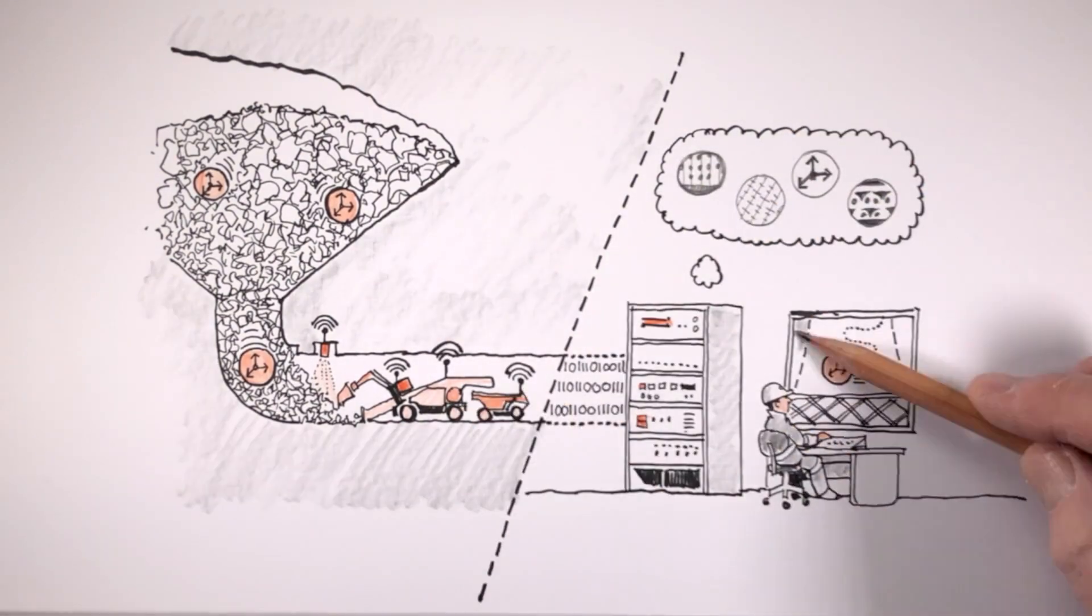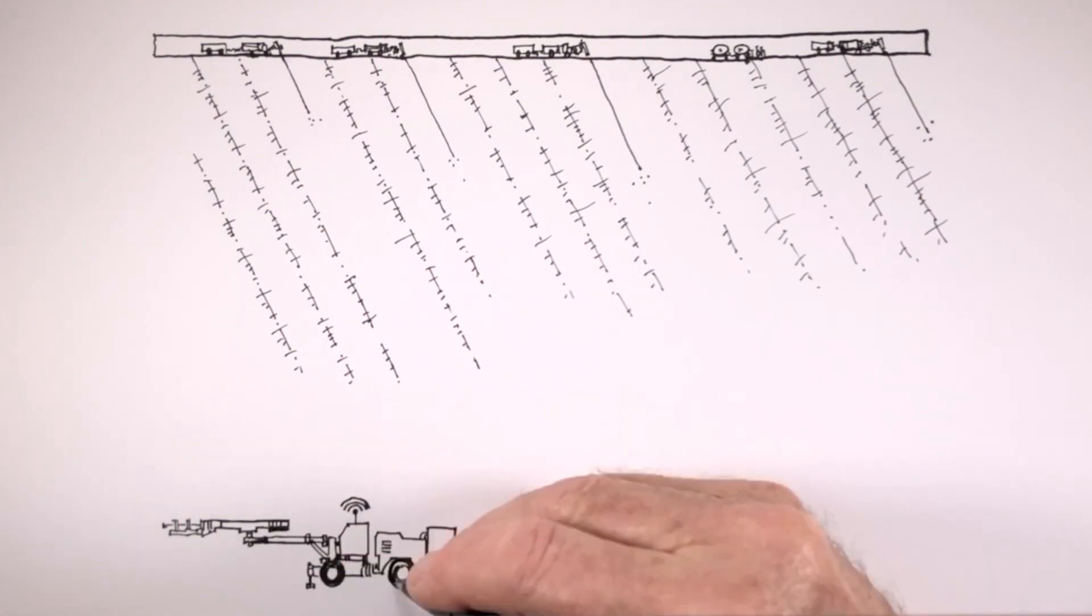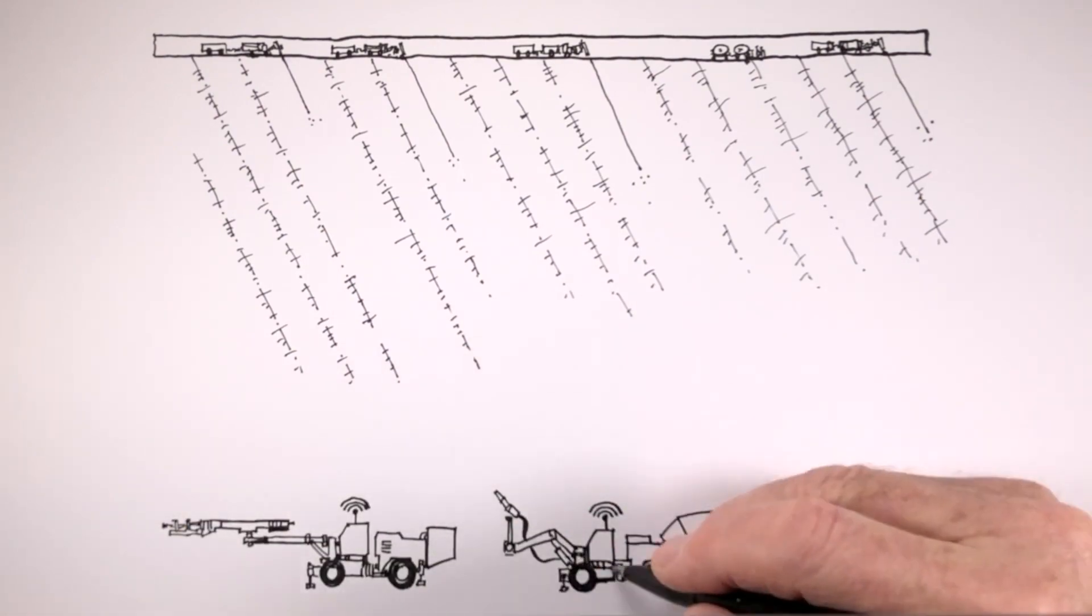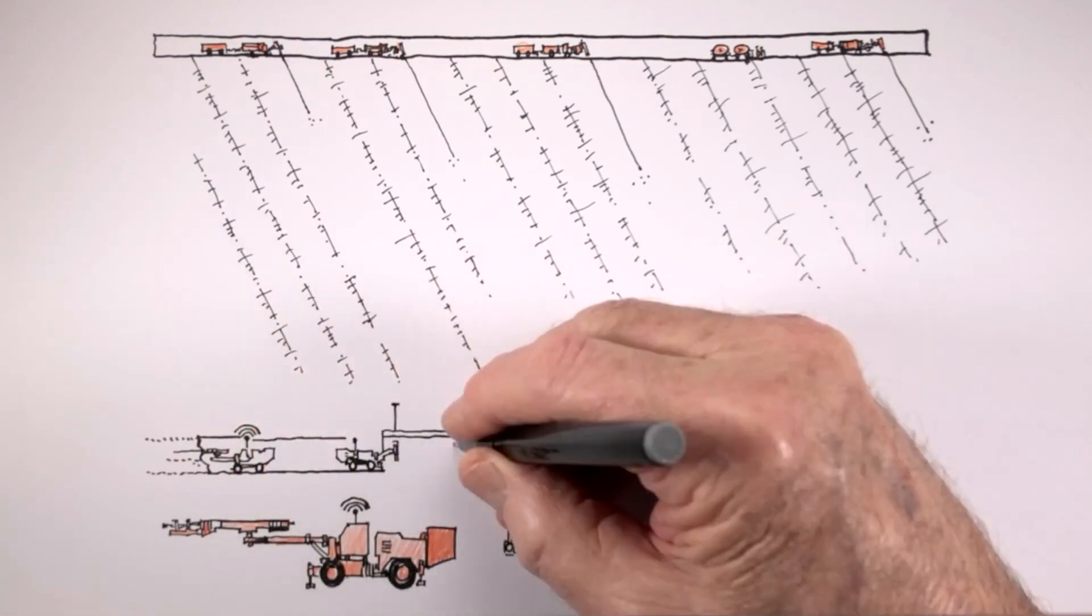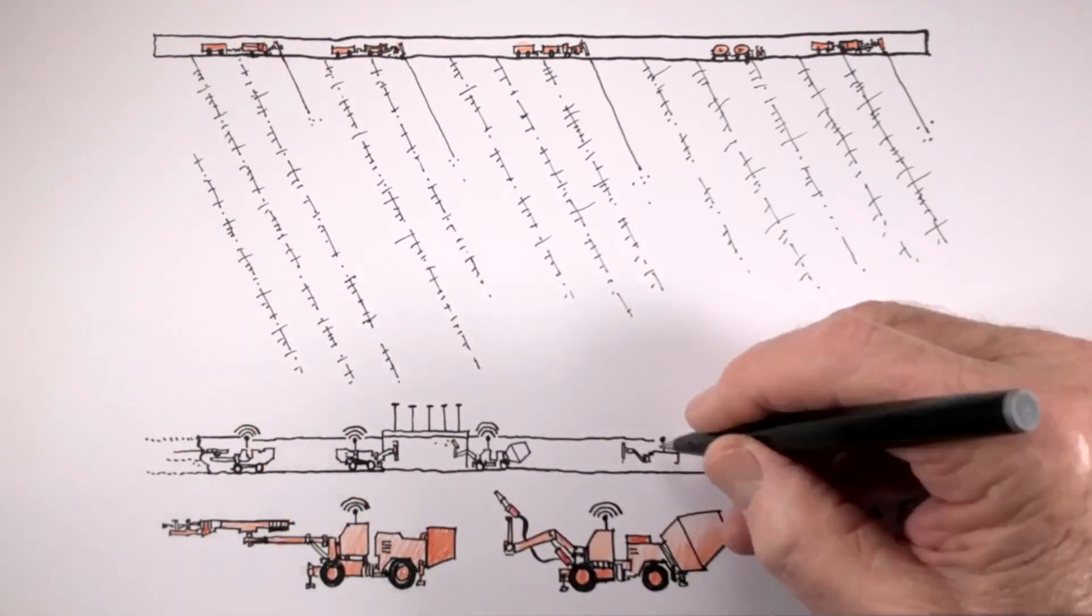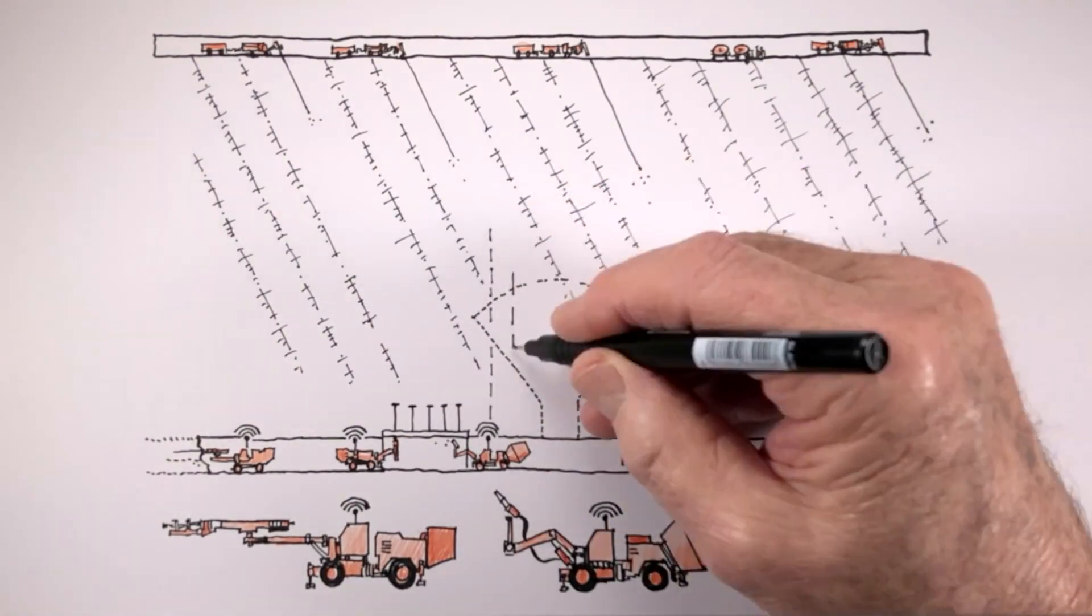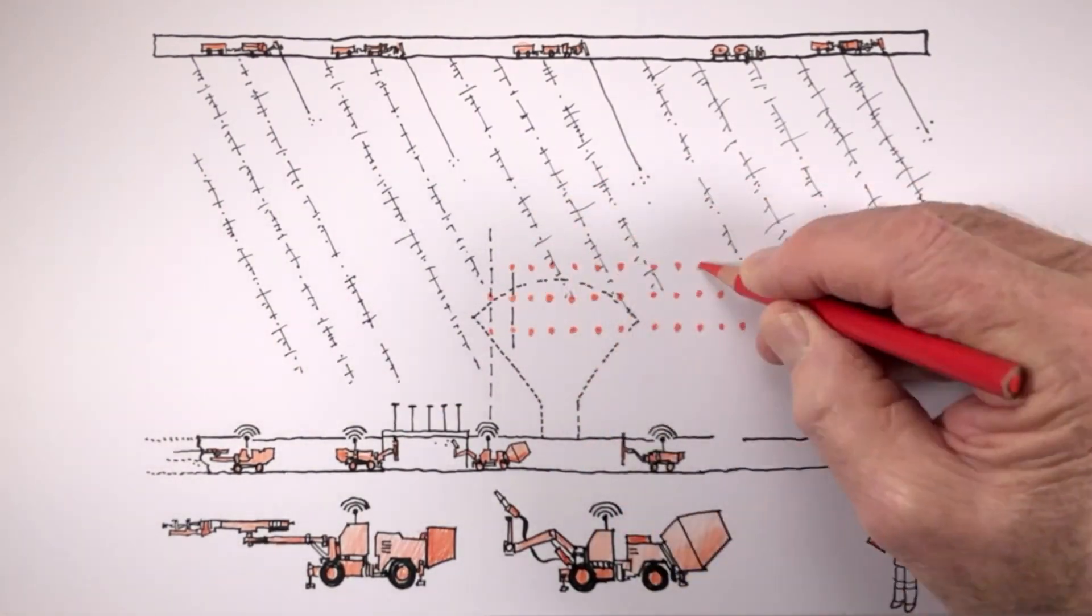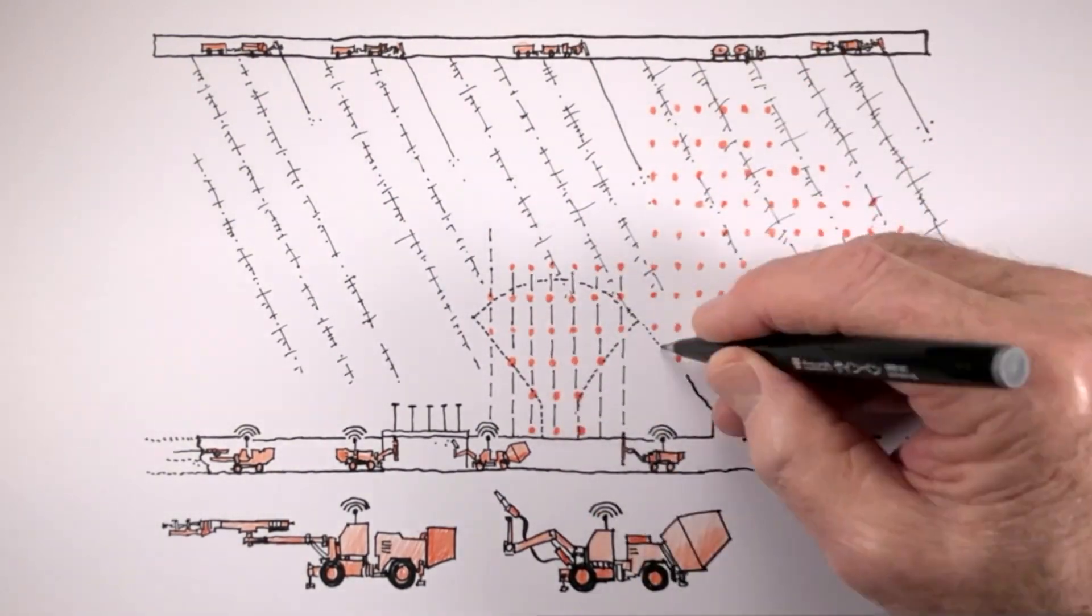Cave establishment will adopt new remotely operated and automated machines to develop tunnels and install ground support, minimizing personnel exposure to seismic hazards. New Wi-Fi explosive detonation technology enables complex charge sequences to be set together and discreetly detonated as needed.